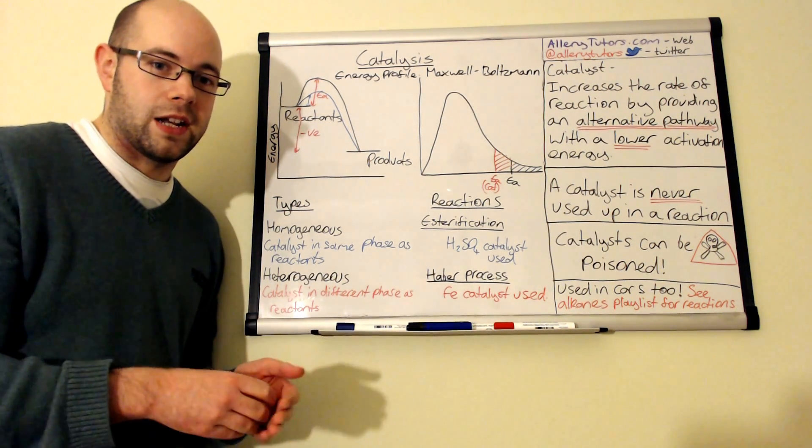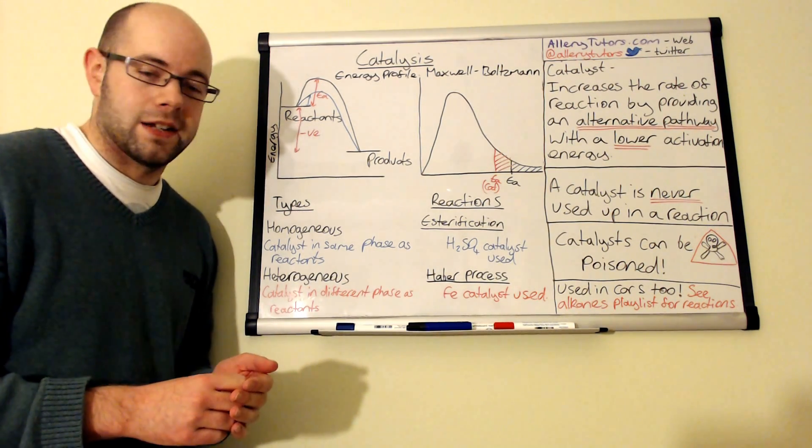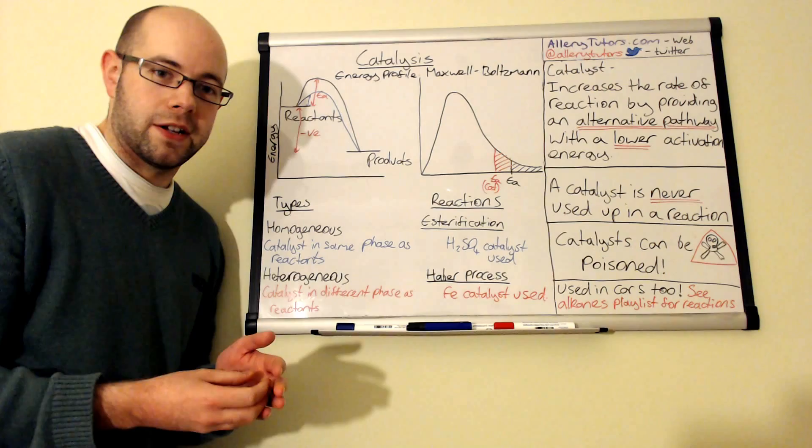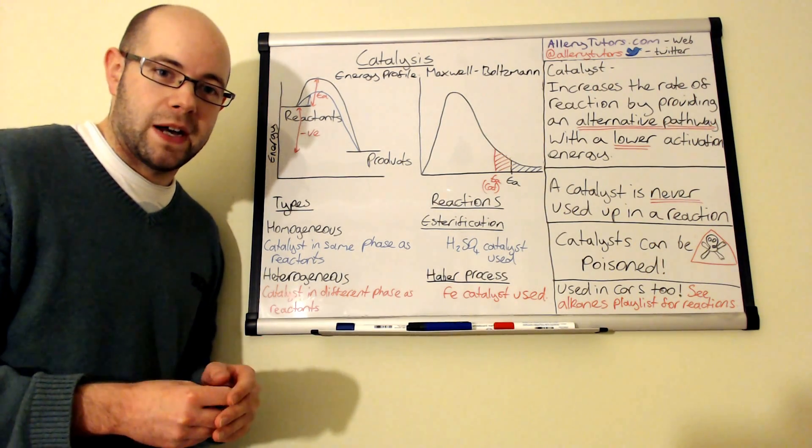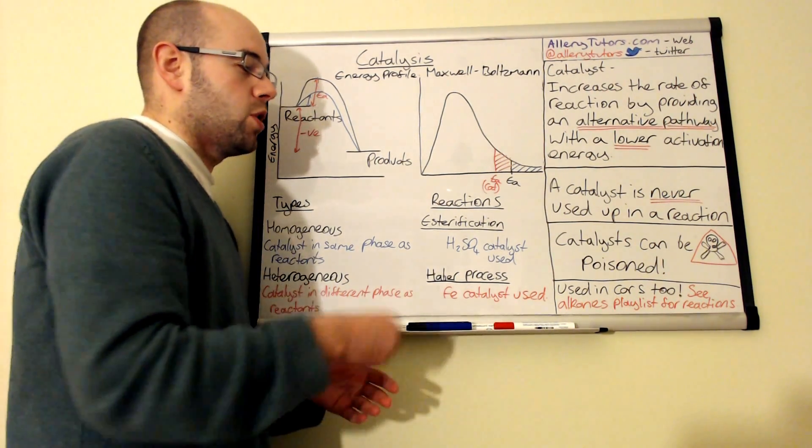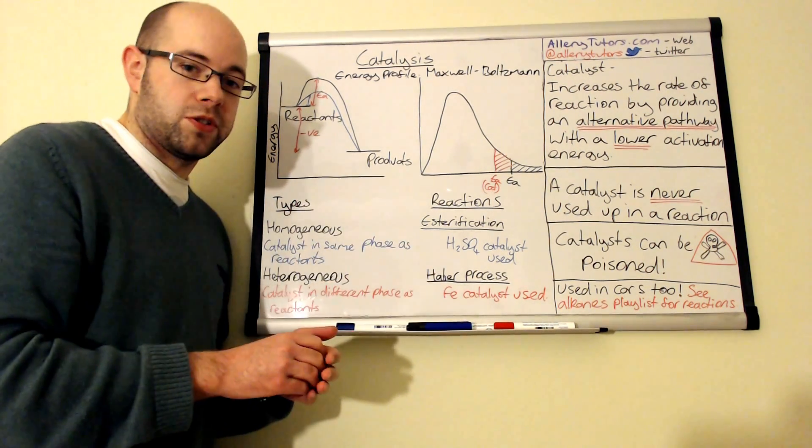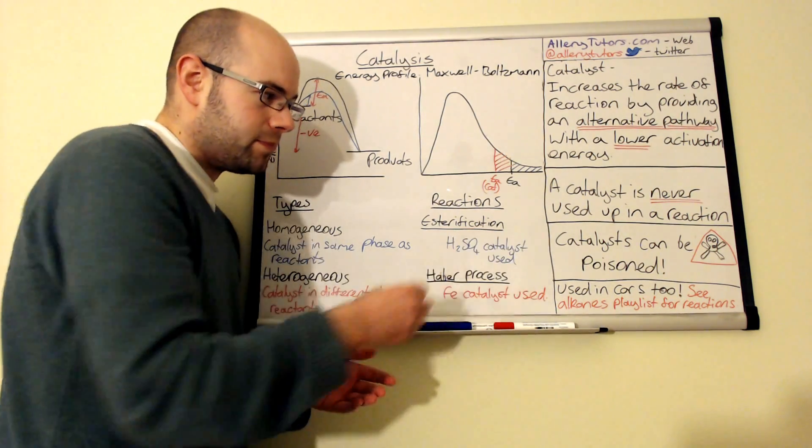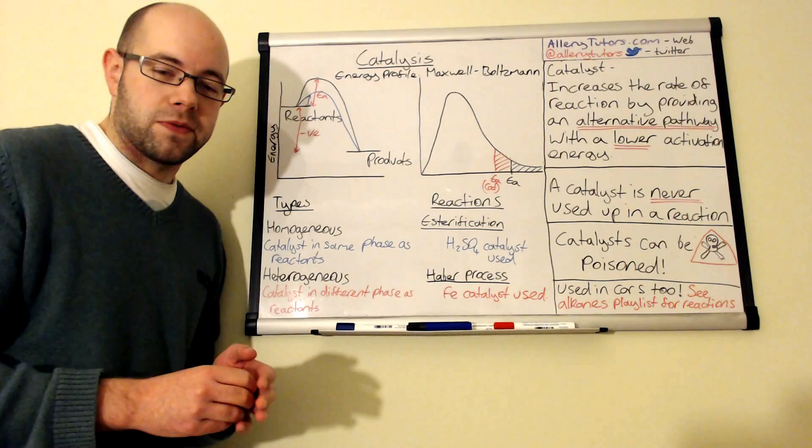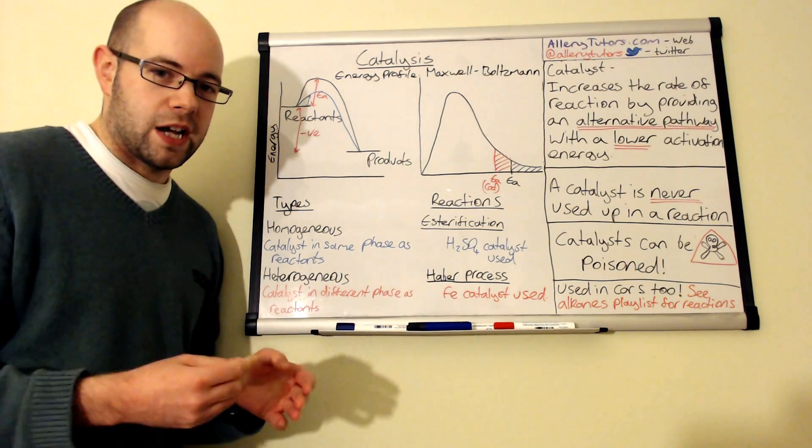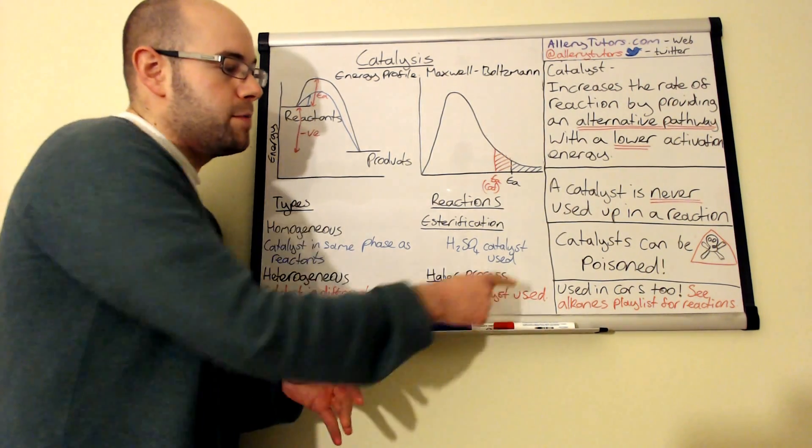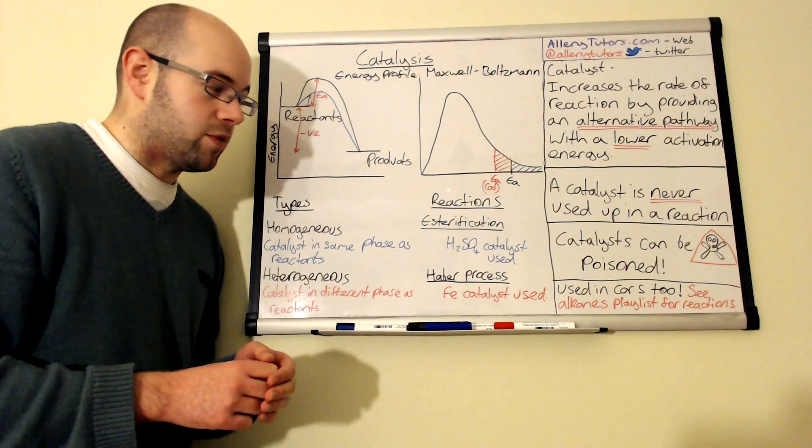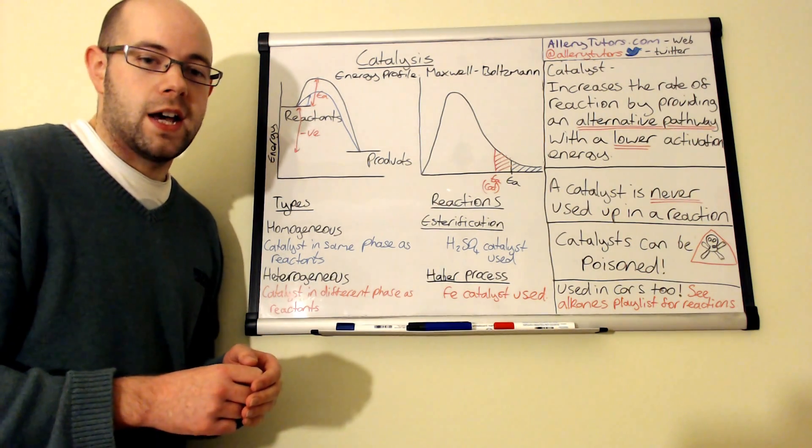Just a final thing: they're also used in cars as a catalytic converter. You use expensive metals like platinum, gold, and other reagents as well. In a car exhaust you'll have platinum—platinum is a very expensive metal, but it's very effective at converting carbon monoxide and nitrogen oxides to nitrogen and carbon dioxide. There is a video that looks into that on the alkanes playlist on the combustion of fuel. If you want to have a look at the reactions regarding that, just click on the link below and you can have a look at that.